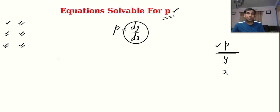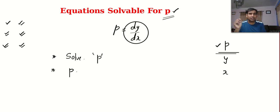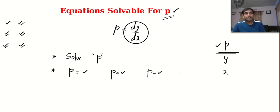So you can write the working rule. The first thing we are going to do is we will solve the equation and find the value of P. The second thing is we will write each value of P independently — P equals the first solution, P equals the second solution, P equals the third solution, and so on for as many solutions as we got.